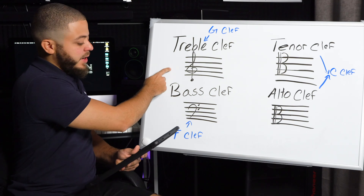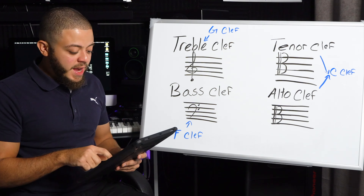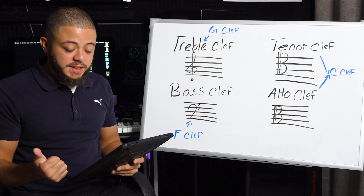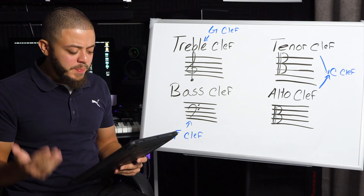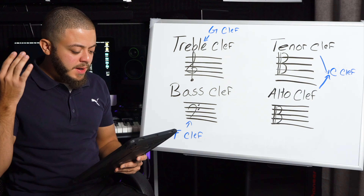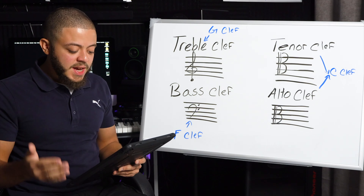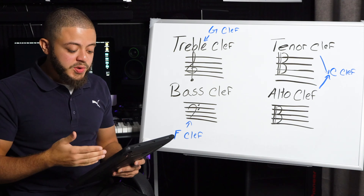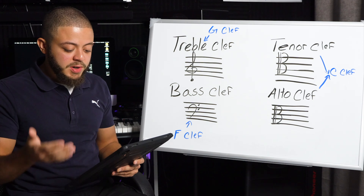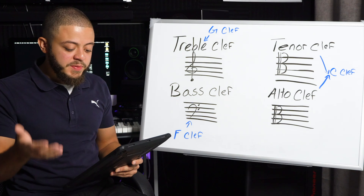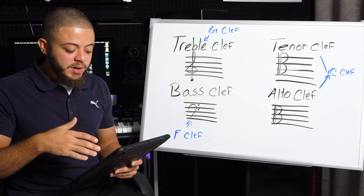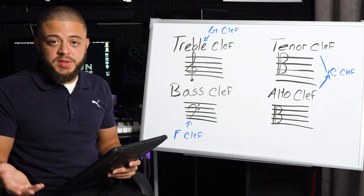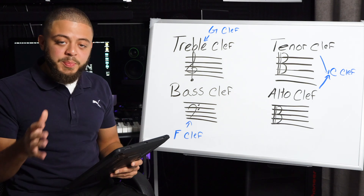On the treble clef right here, we have violins, flutes, oboe, bagpipes, clarinets, saxophone, French horns, trumpet, cornet, vibraphone, xylophone, mandolin, recorder, as well as the guitar and the piano.